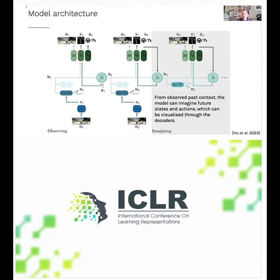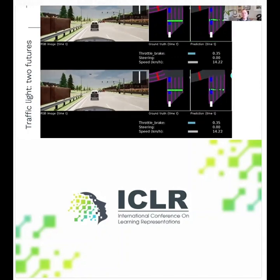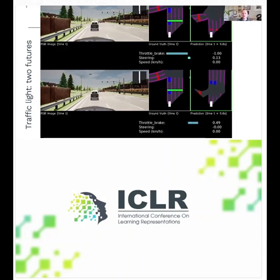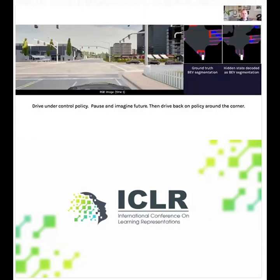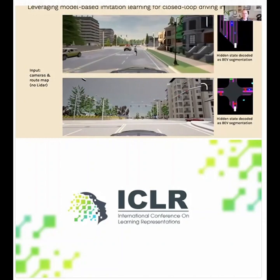Mile used a fairly interesting autoregressive architecture where you can encode from observation, decode back to another observation or to the bird's eye view representation, and unroll to dream into the future. We can see multimodal predictions: the top row shows an example where the traffic light turns red in imagination and the ego vehicle stops; the bottom row shows the vehicle continuing through the light. We can then drive around in the simulator using this, and it improved our driving performance.